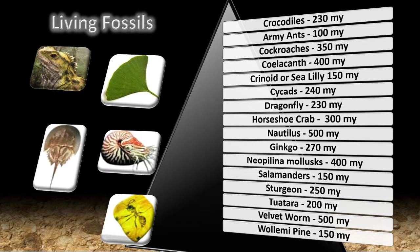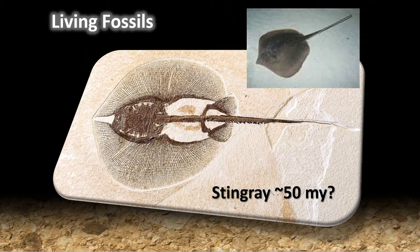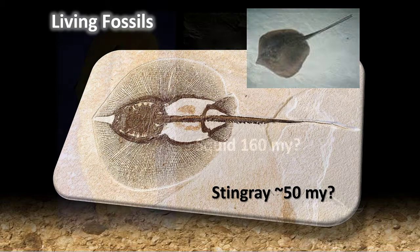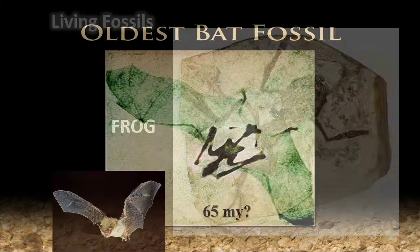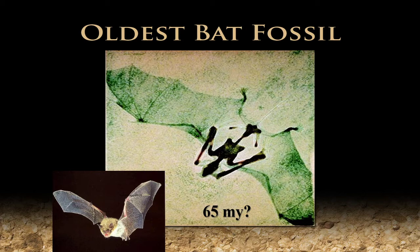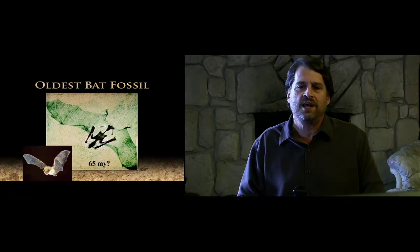Many fossils dated in the hundreds of millions of years can still be found alive today, virtually identical. Stingrays in the fossil record date back 50 million years but are identical to stingrays alive today. Squids are the same even though they date back 160 million years. Lobsters are the same at 200 million years. Cockroaches, shield bugs, frogs, and bats are all the same. When these animals first appear in the fossil record, they appear perfectly formed.